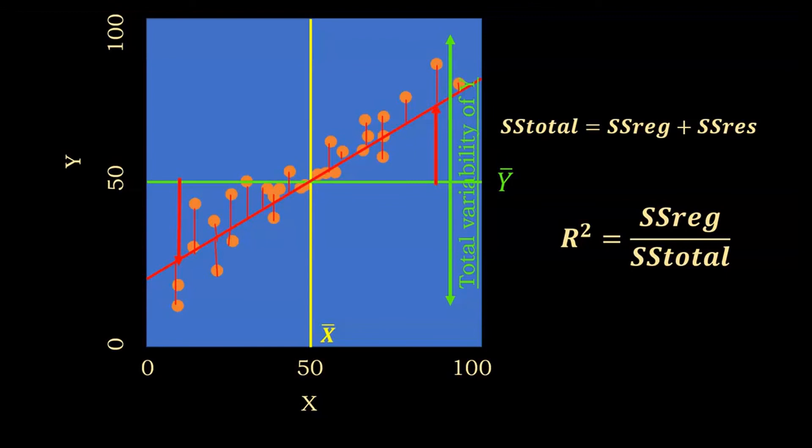And finally, the R-squared value is obtained with the ratio of the sum of squares of the regression and sum of squares total.